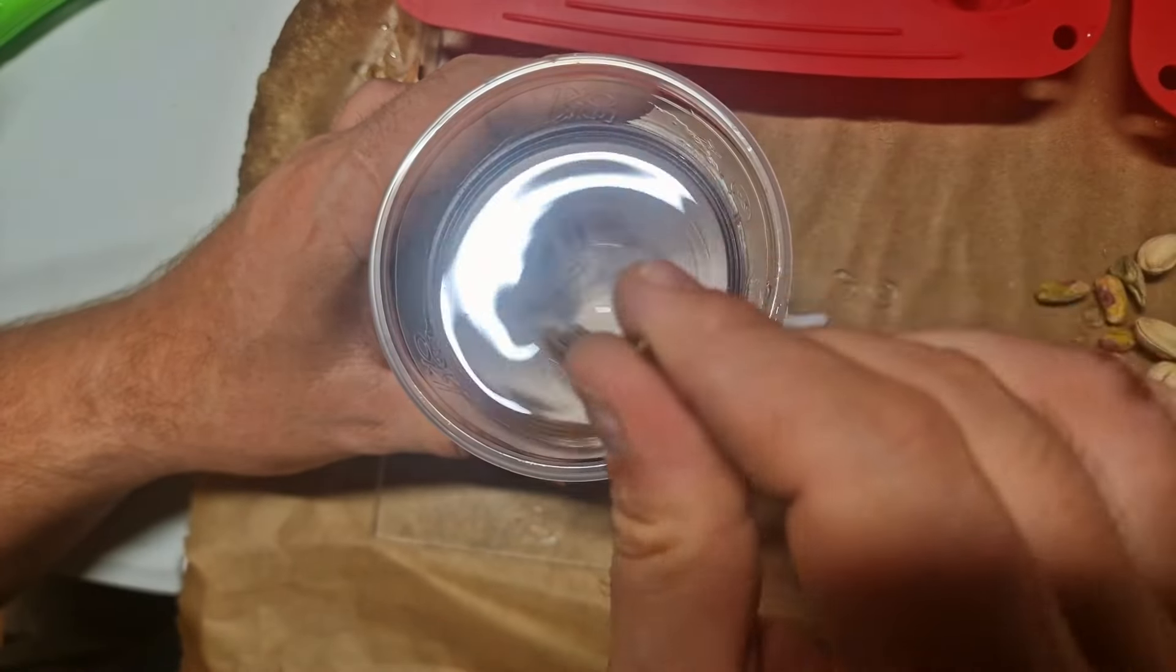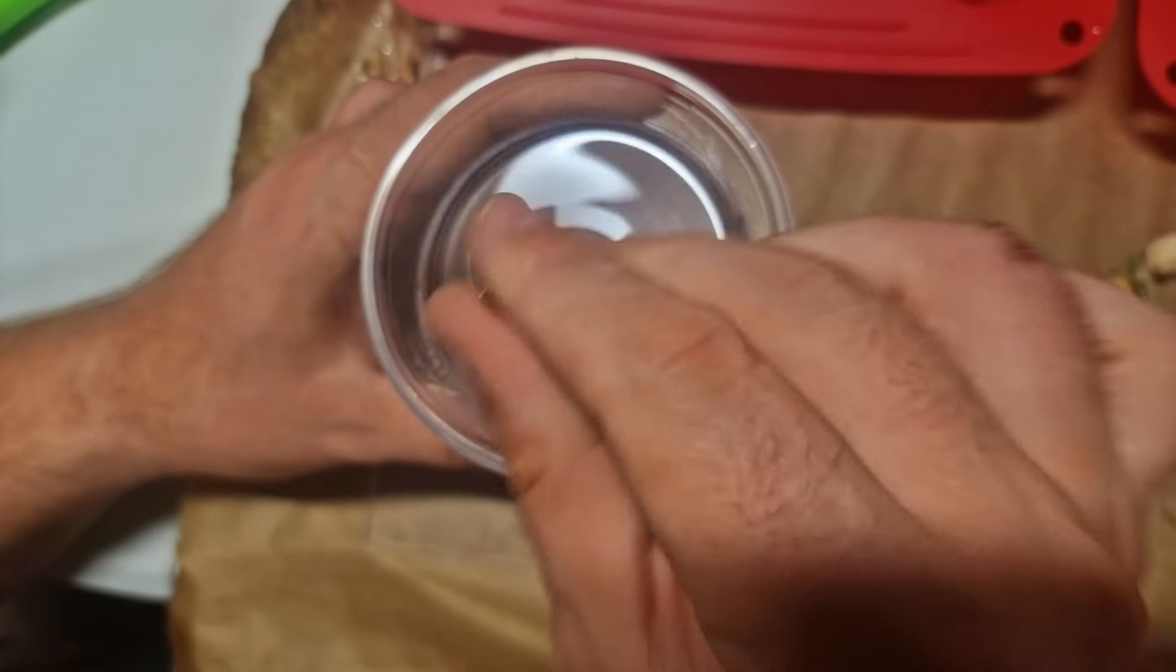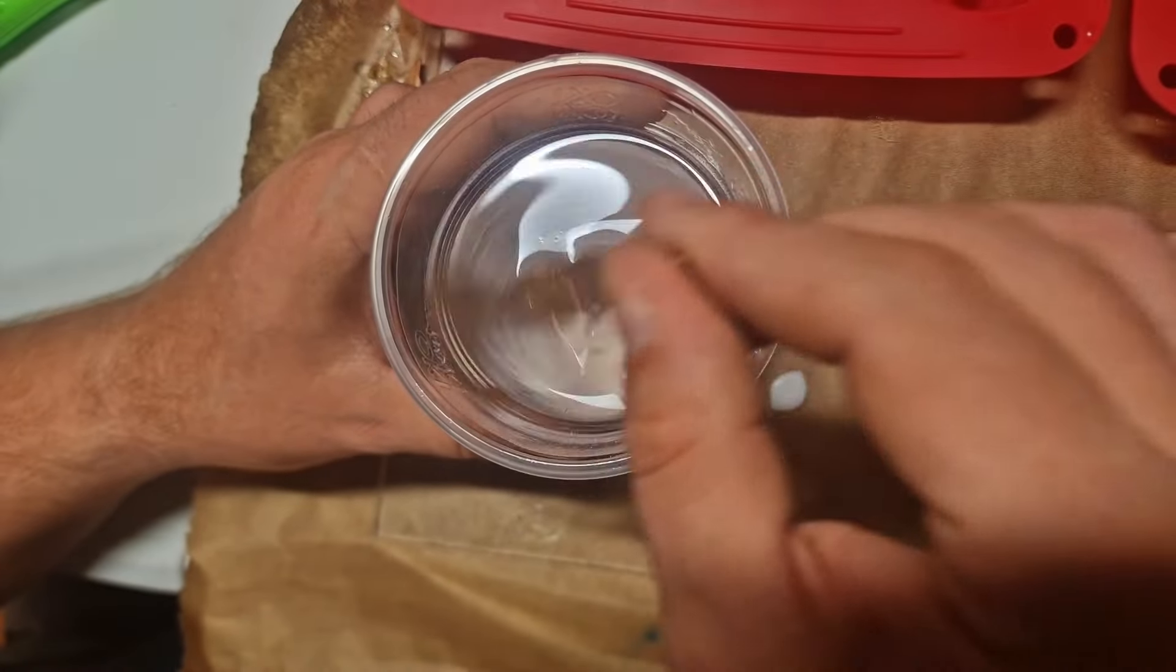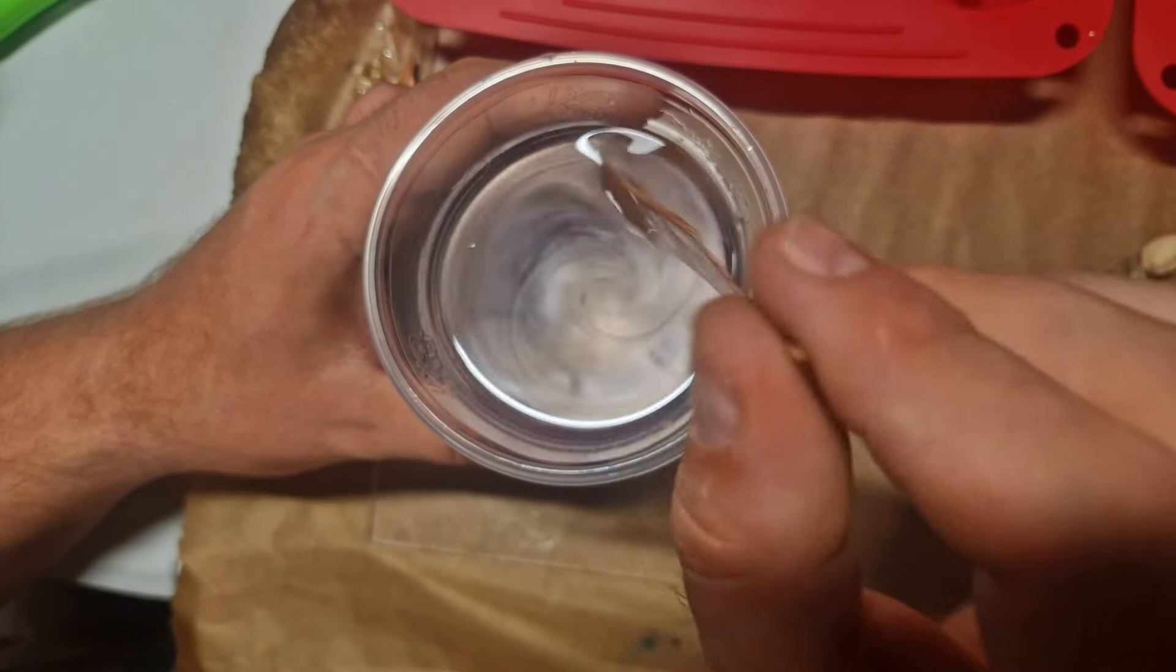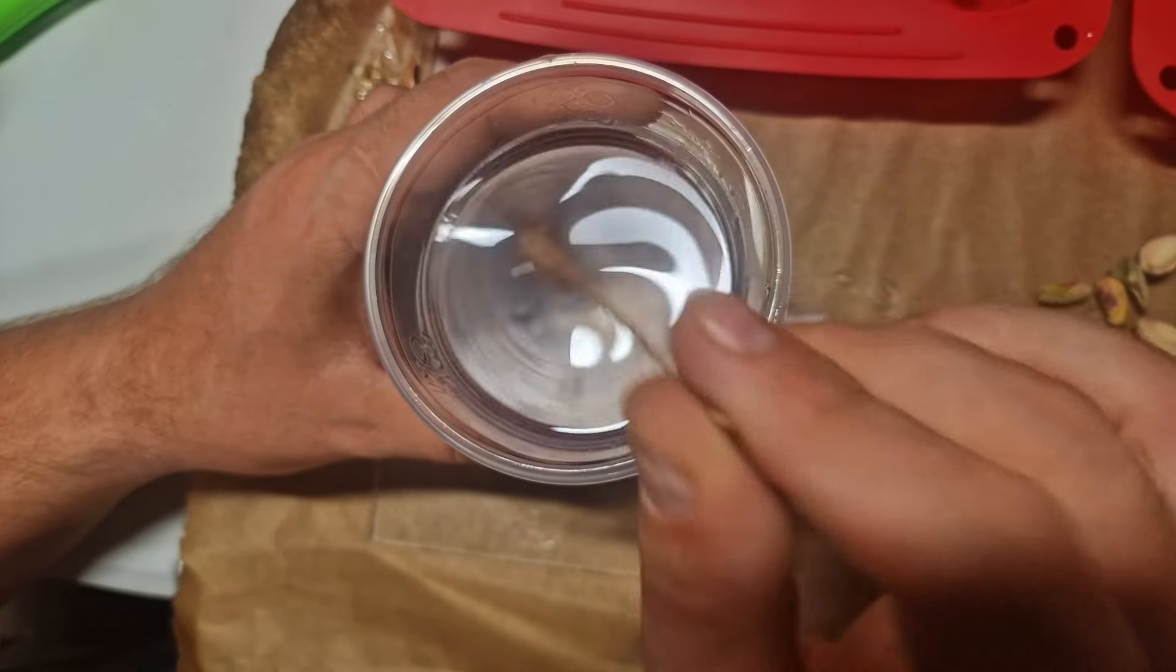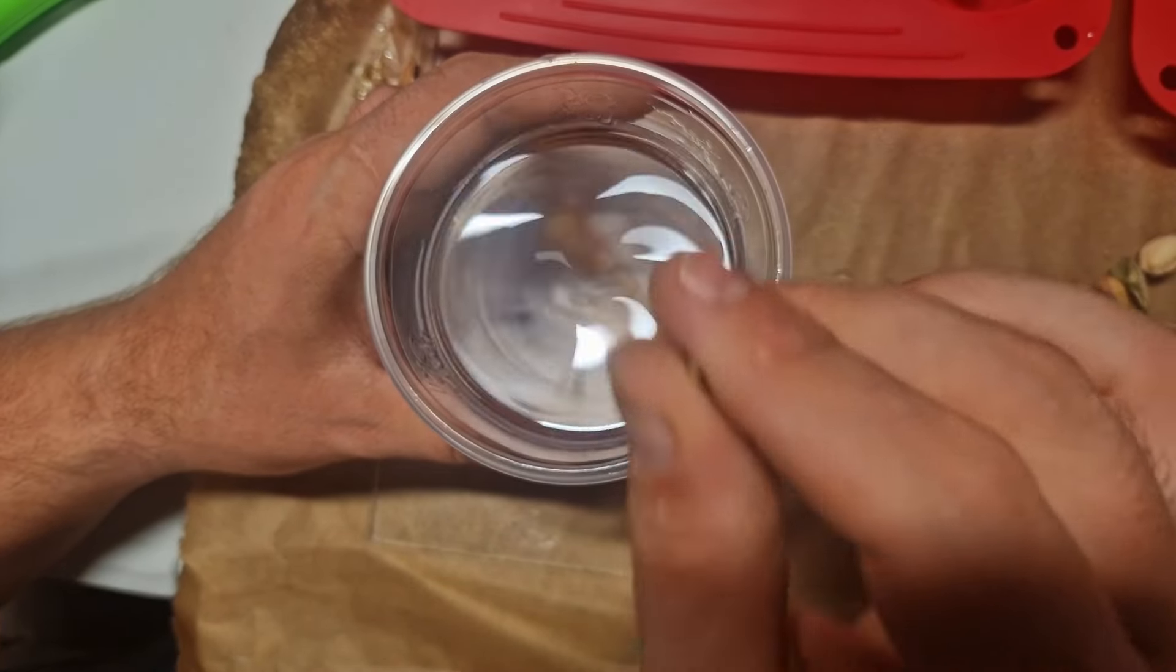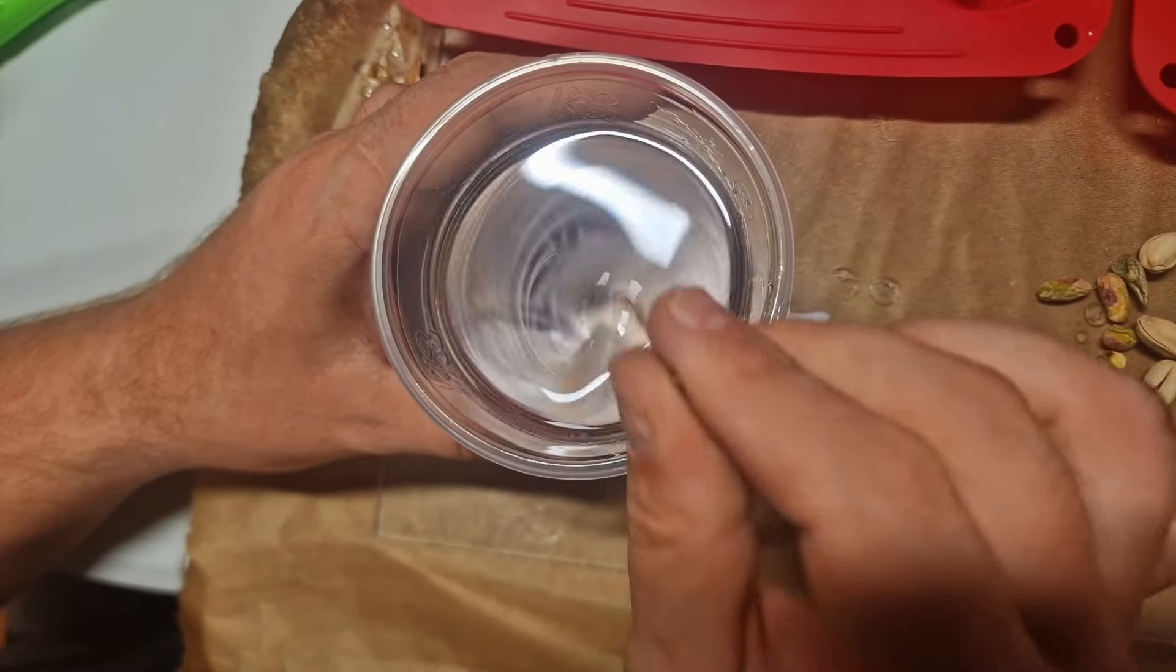When you scrape the walls, when you scrape the bottom, you don't have to be extremely fast. You don't have to do this like an animal. The goal here is to have enough part A next to enough part B so that the chain reaction of the curing can start and they can bond together, creating the hard resin.